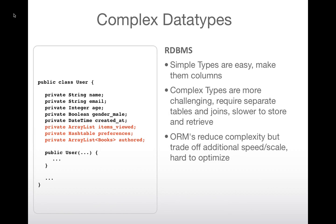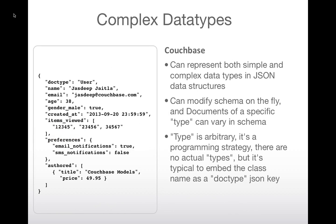In Couchbase, for that same example, I have a document with the exact same information — I can represent that user object directly as a JSON document. I also include what I call a 'doc type': a JSON key specifying the class that generated this document. Some people call it 'type,' 'doc type,' or 'class' — it's a convention useful in views, which we'll discuss in Couchbase 103.